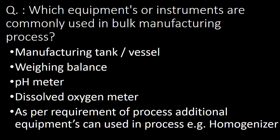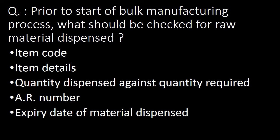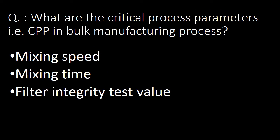Next, a very commonly asked question: prior to start of bulk manufacturing process, what should be checked for raw material dispensed? We should check for item code, item details, quantity dispensed against quantity required, AR number of dispensed material, and expiry date of material dispensed.